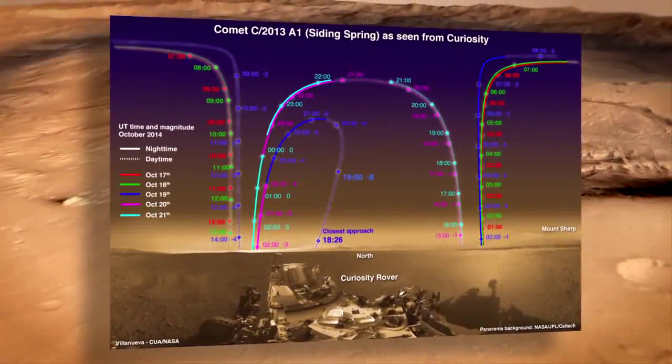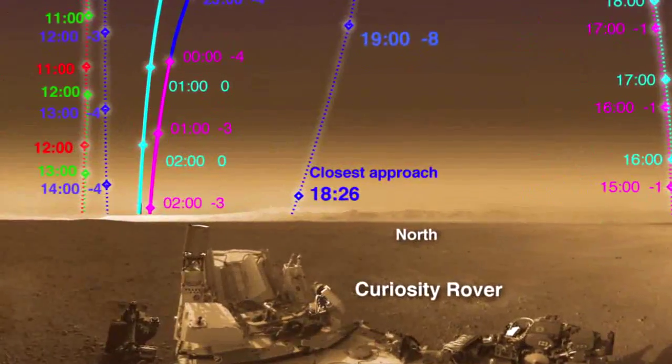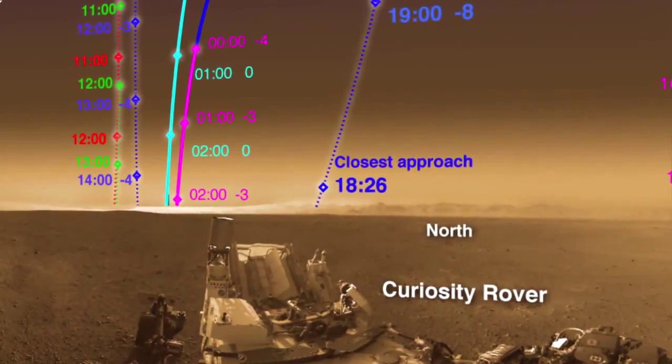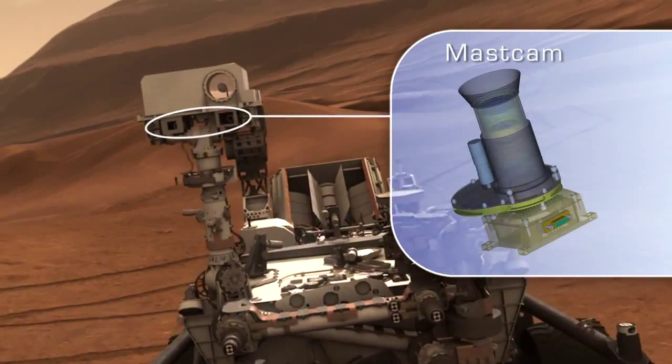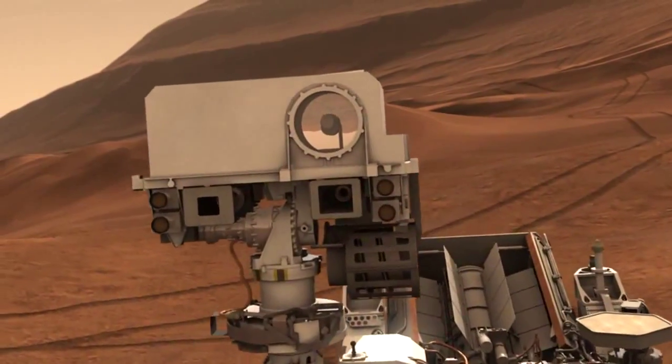At Gale Crater, NASA's Curiosity rover will turn its gaze skyward for several days surrounding the flyby. Curiosity's MASTCAM will study the comet's general features, while the CHEMCAM instrument will look at its chemical makeup.